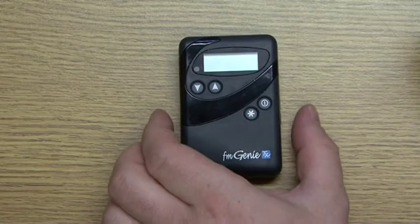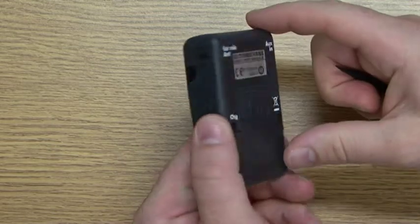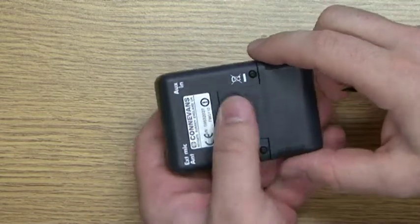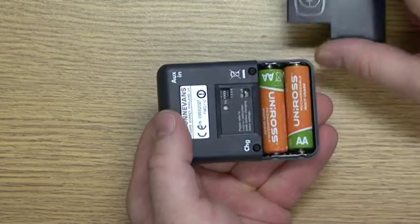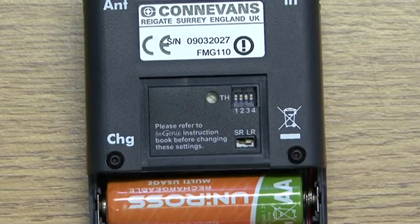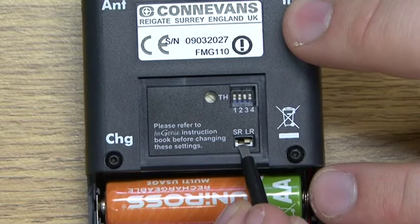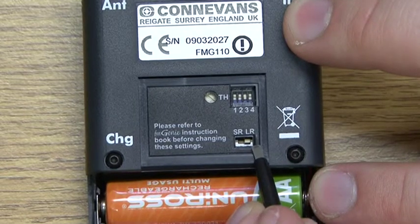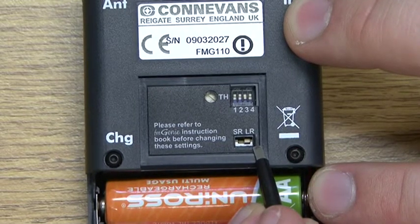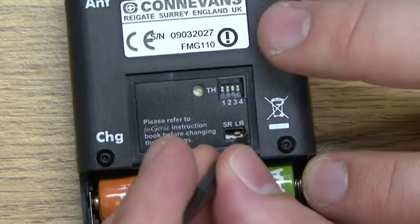This is the FM Genie transmitter. By removing the battery cover on the back, we can see transmission power selection switch marked as SR short range and LR long range. Normally, for hearing aid, it's set to SR, particularly in an environment where there are many other personal FM users or other FM wireless systems.